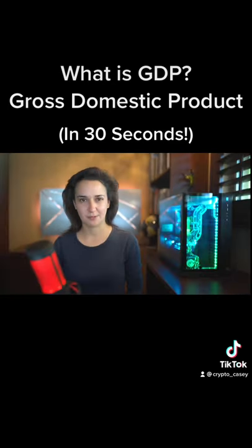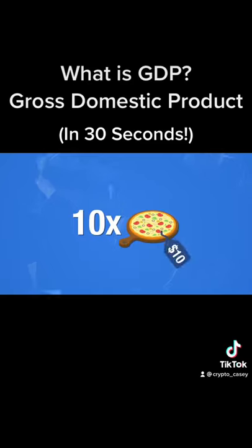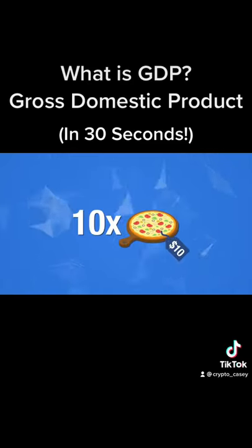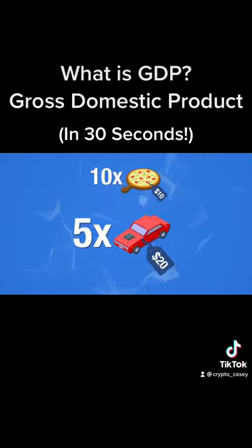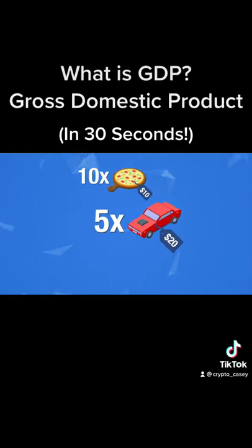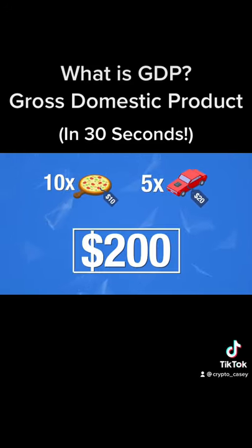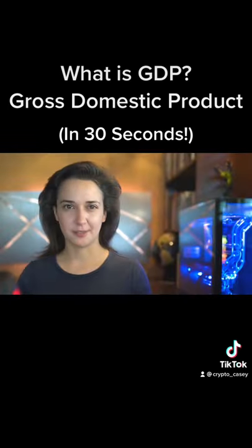For example, if a country's total output for the year consisted of selling 10 pizzas for $10 each and performing 5 carwashing services for $20 each, the total GDP or gross domestic product for that country would be $200. Simple enough, right?